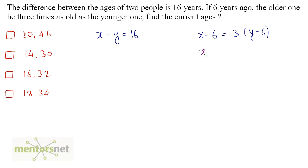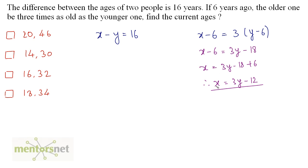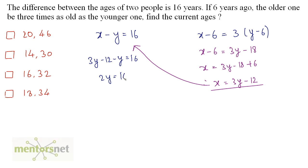Let us solve this. x minus 6 is equal to 3y minus 18. So, x is equal to 3y minus 18 plus 6. Therefore, x is equal to 3y minus 12. We have the value of x. Let us put it in the first equation: 3y minus 12 minus y is equal to 16. So, 2y is equal to 28. Therefore, y is equal to 14.